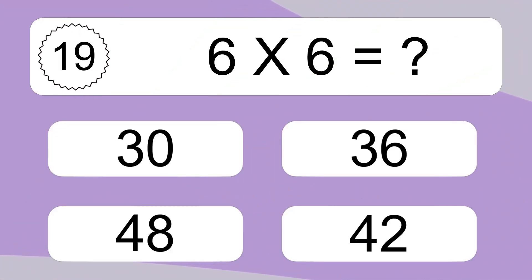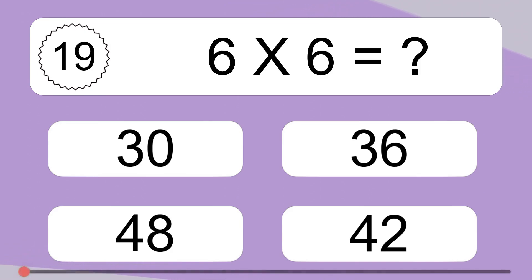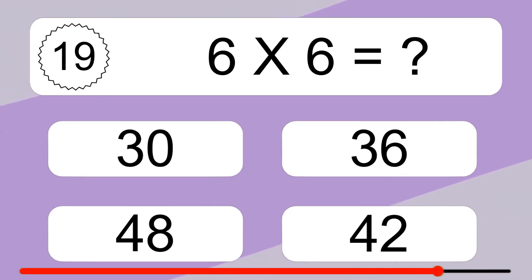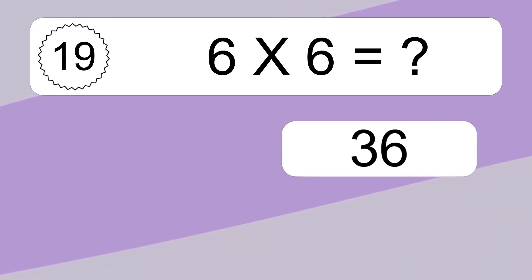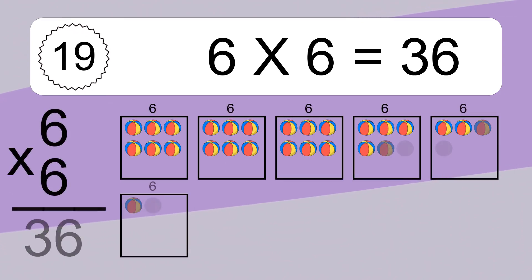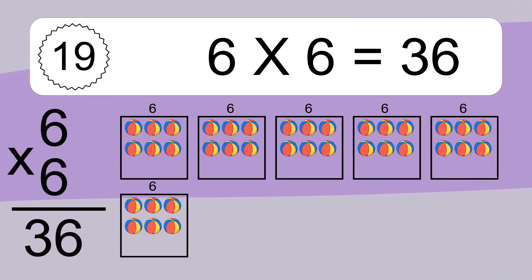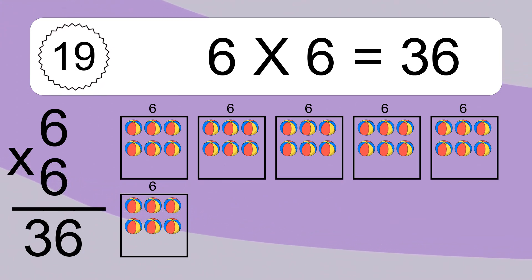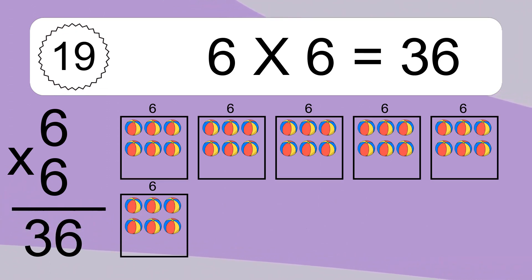We have 6 boxes, and each box has 6 colorful balls inside. 6 times 6 equals 36. If you count all the balls in all the boxes together, you will have 6 times 6 balls. This equals 36 balls.